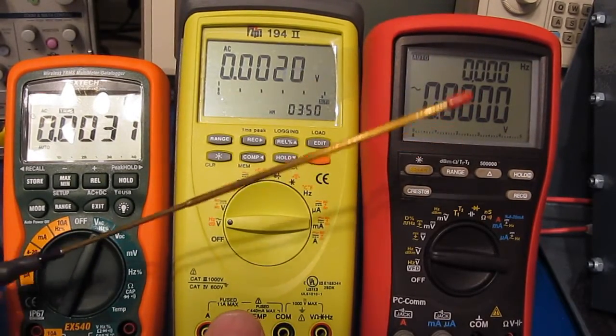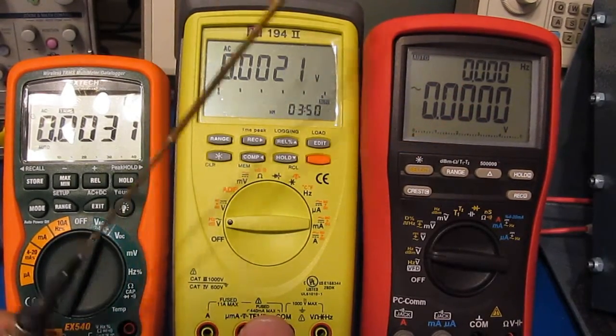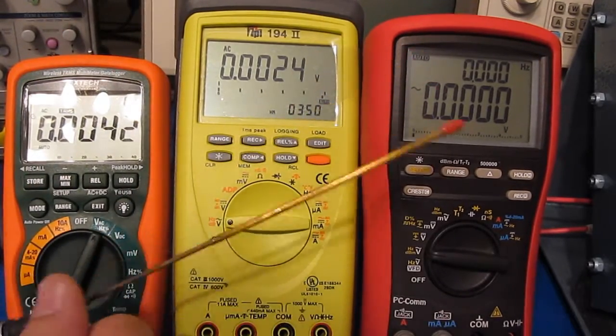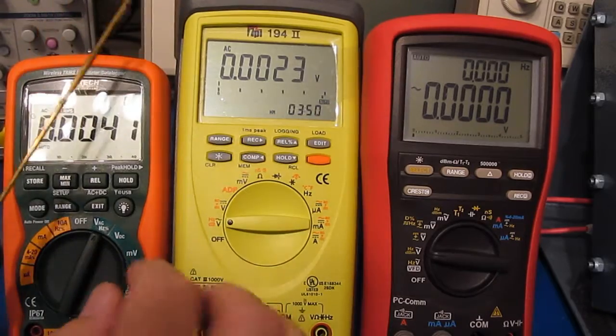What I've been doing is sweeping the frequency while varying the antenna position around the two meters, and both of these meters I haven't found a sweet spot where they're affected. So that's pretty good.